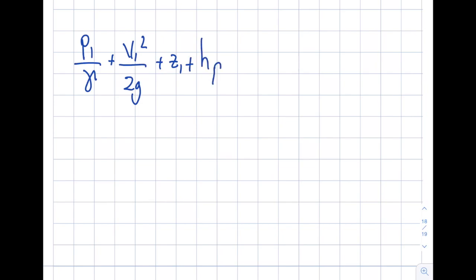Power input will be equal to P2 over specific weight plus V2 squared over 2g plus Z2 plus HL major. Please note that HL minor, neglecting the effect of it, is 0. That's given to me in the question statement.